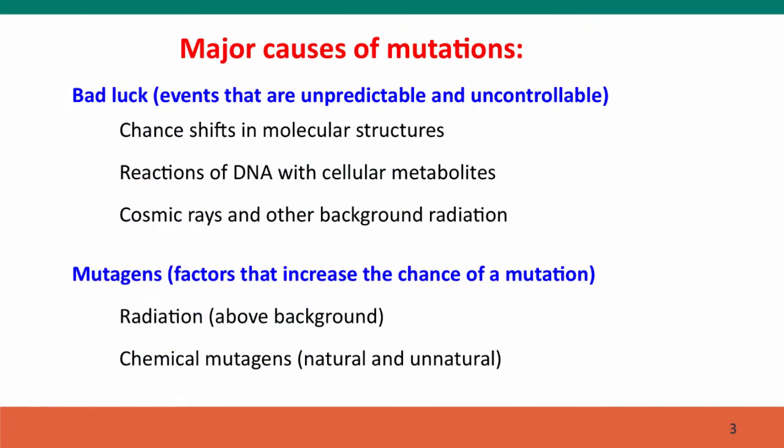Now we can divide the causes of mutation in various ways, but one way is to think of them as either bad luck or mutagens. So factors that we consider bad luck would be events that are both unpredictable and uncontrollable. Things like random shifts in the structures of the molecules. For instance, many of the mistakes that DNA polymerase makes occur because the bases shift their chemical conformation unpredictably. There's also the fact that our cells are full of very reactive chemicals generated as by-products of normal cellular metabolism. And these reactive chemicals can react with our DNA. We're also subject to constant bombardment, cosmic rays and other background radiation, all of which can cause mutations that we have no control over.